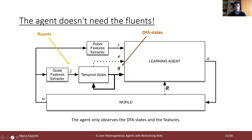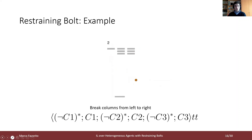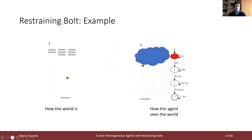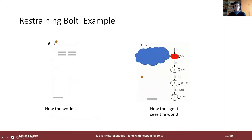Crucially, the agent only observes the DFA state and the features, and it can be proved that it does not need to observe the fluents in order to learn the temporal specification. To make this idea clearer, consider the game Breakout, where the goal is to control a paddle to bounce the ball upwards to destroy the bricks. Consider the temporal specification to break the columns of bricks from left to right. On the left you can see how the world actually is, and on the right how the agent sees the world. Notice that the learning agent doesn't need to observe the bricks — it is enough to know at which point of the satisfaction of the goal it is.